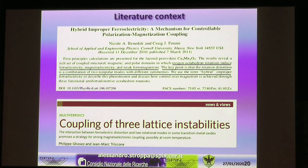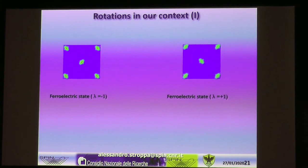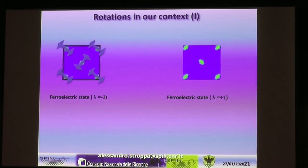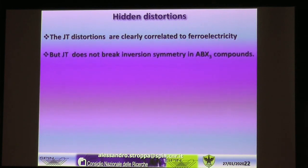We then realized that papers published around the same time were describing hybrid improper ferroelectricity, which requires two non-polar modes — modes that keep the inversion symmetry — specifically rotations. In a sense we have a kind of rotation in our compound too: considering the orbital ordering at λ=±1, there is a rotation of the orbital pattern corresponding to a pseudo-rotation in the Jahn-Teller formalism. So we have a kind of rotation as a non-polar distortion, suggesting there may be additional distortions we hadn't analyzed.